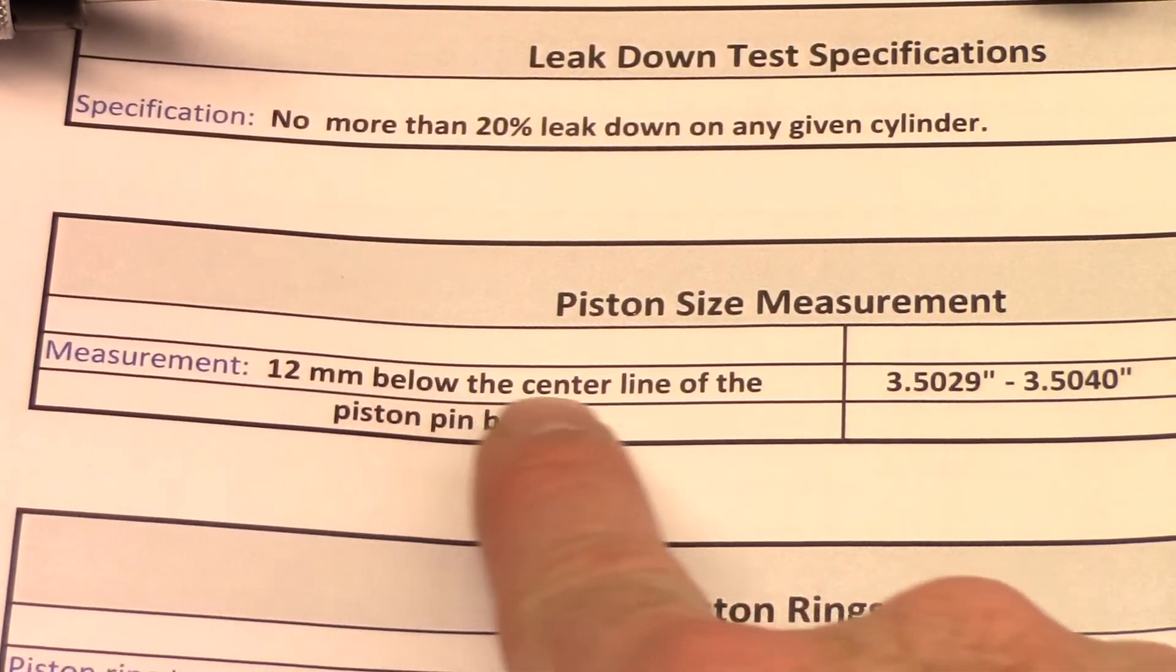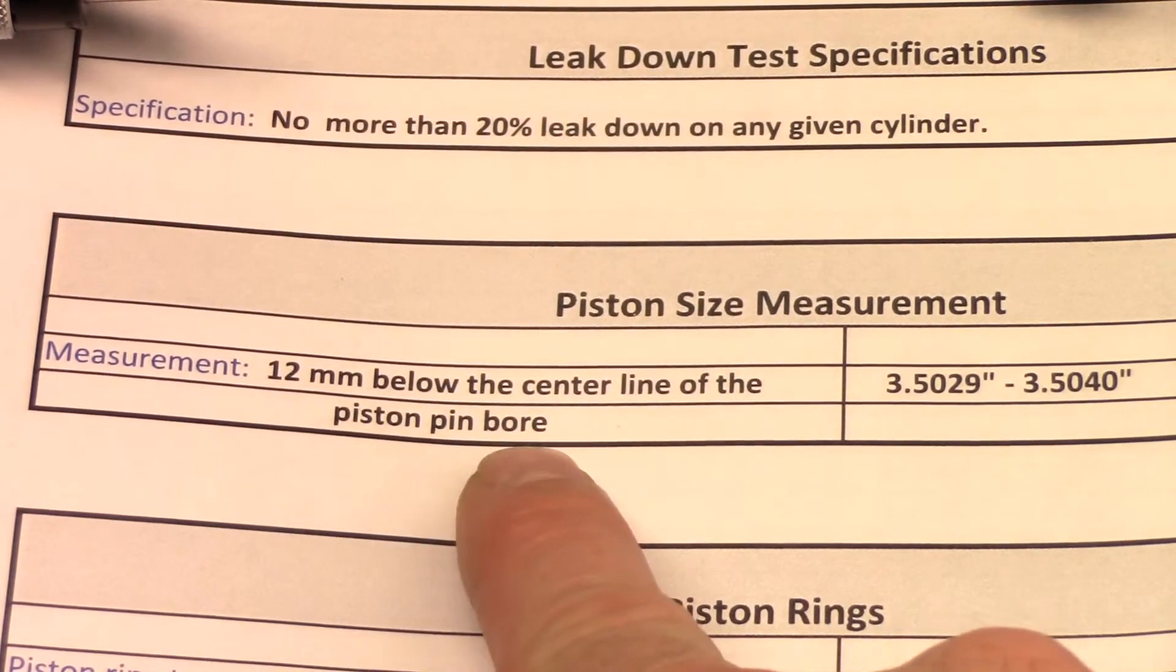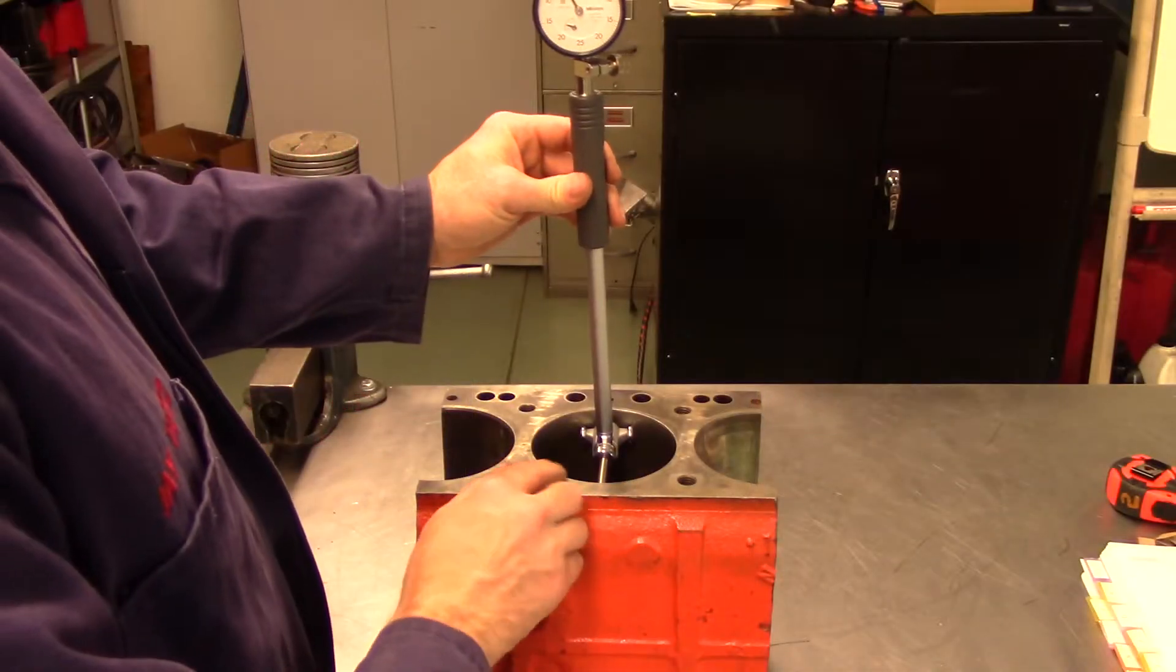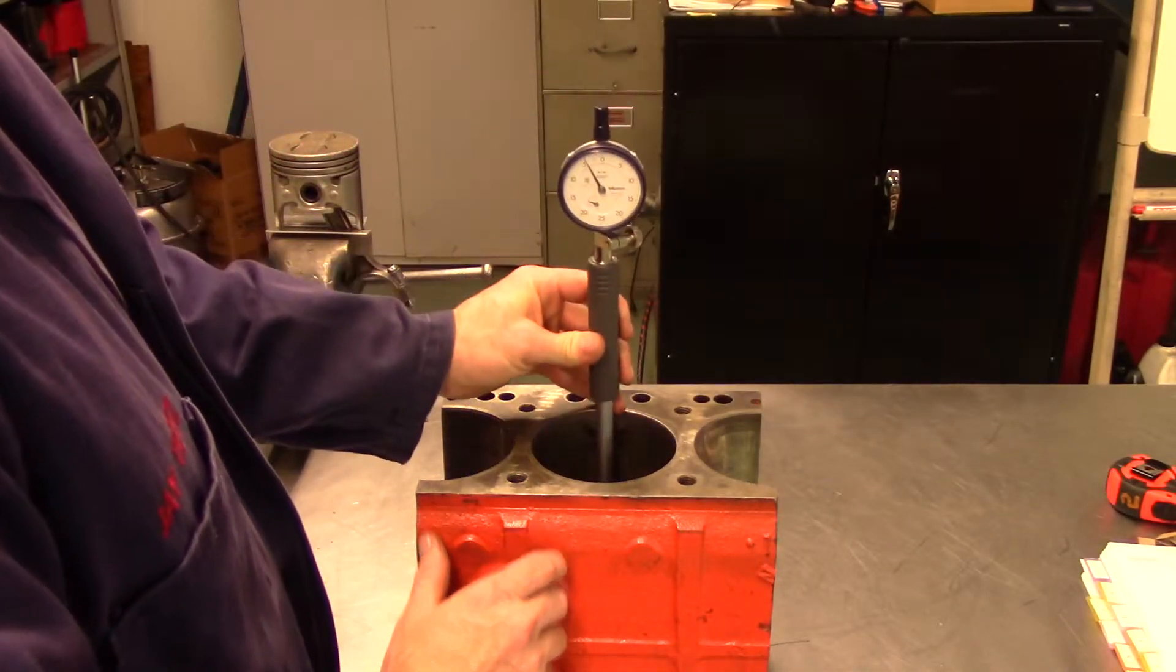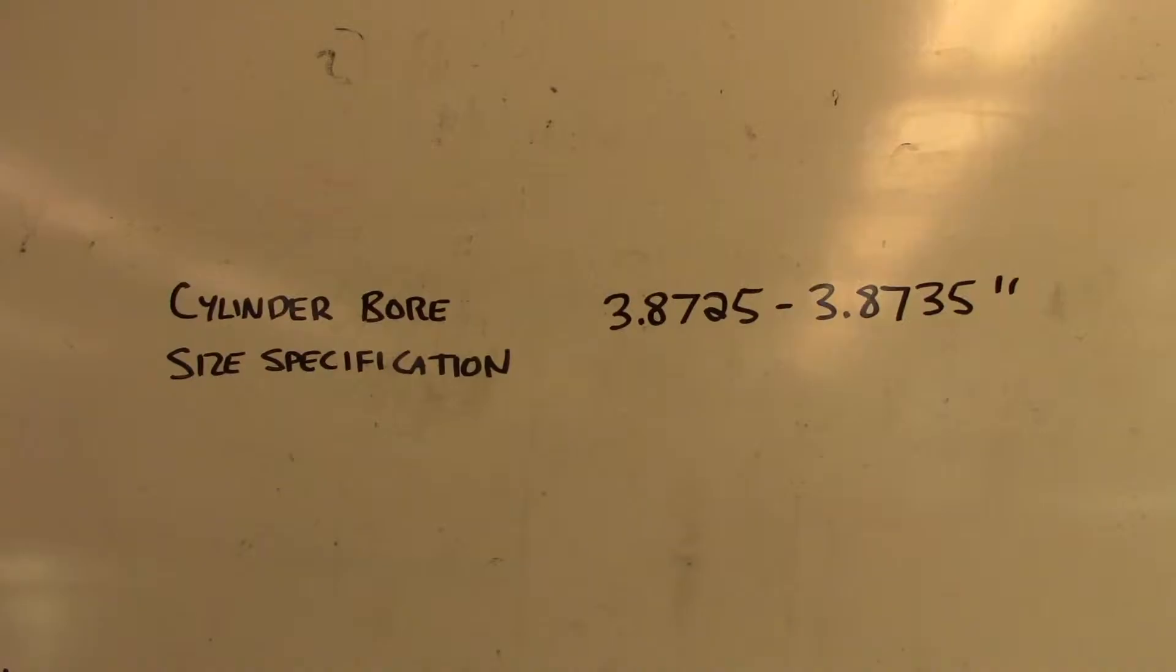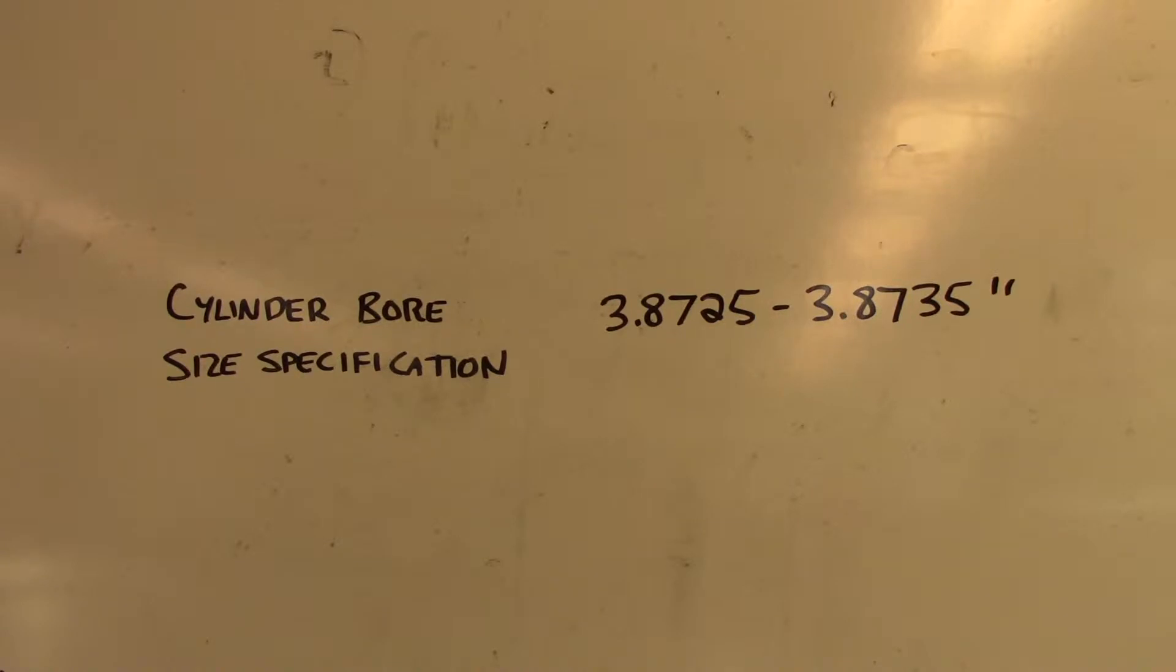When measuring cylinder bore size, it is important that we take the measurement at a place where the cylinder is the smallest. Measuring just below ring travel at bottom dead center will give us the dimension of the cylinder where no wear has occurred. Here is an example of how to measure cylinder bore size.